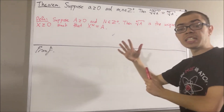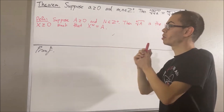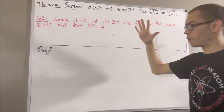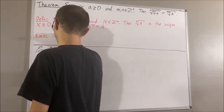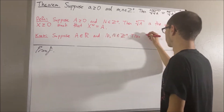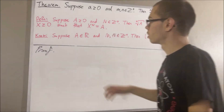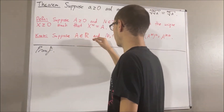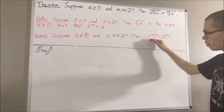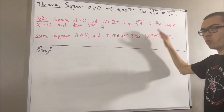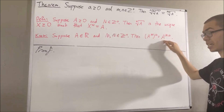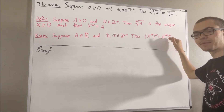A property of positive integer exponents that we're going to be using in proving this theorem is the following. Suppose A is a real number, and M and N are positive integers. Then A to the power of M raised to the power of N is equal to A to the power of M times N.